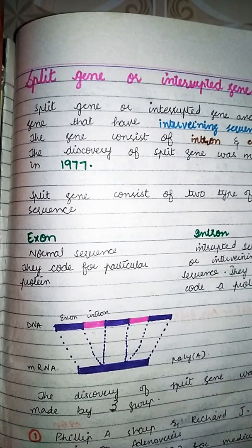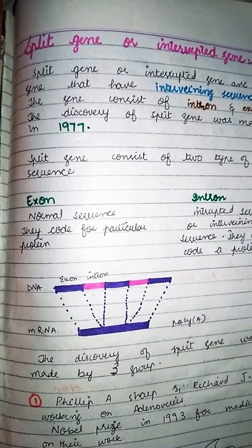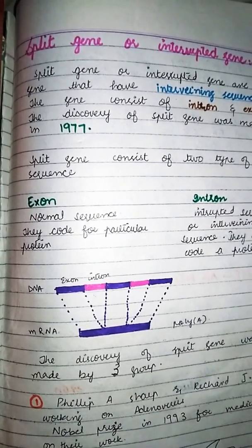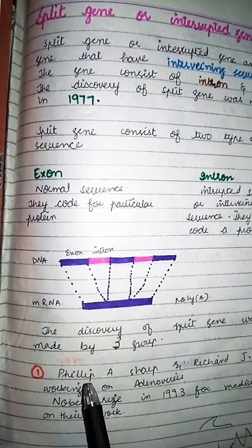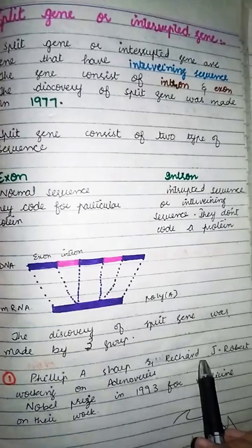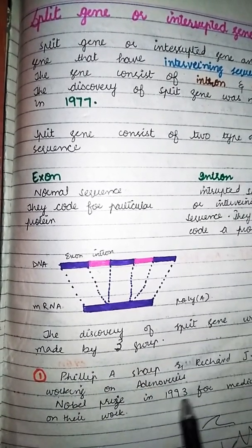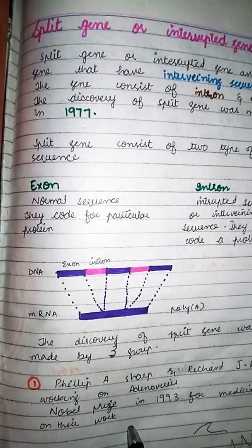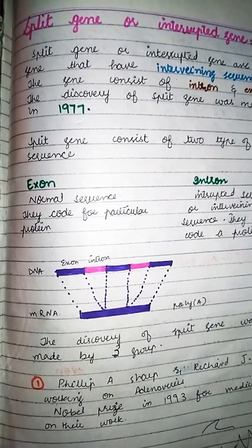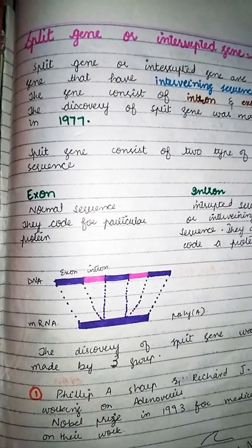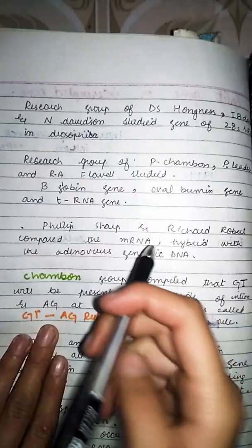Split gene کی discovery three groups نے کی۔ First group: Philip A. Sharp اور Richard J. Roberts نے adenovirus پر کام کیا۔ انہیں 1993 میں Nobel Prize in Medicine ملا۔ یہ وہ پہلا group تھا جنہوں نے split gene کو صحیح طریقے سے identify کیا۔